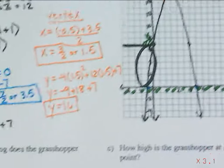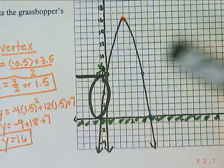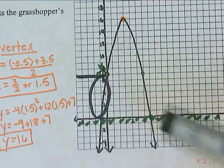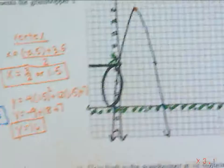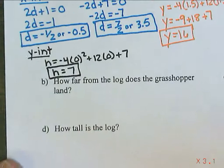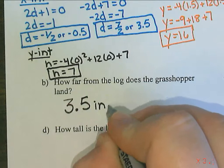So when he is jumping, it says how far from the log does the grasshopper land? So if I take a look, he jumps up, comes down, and he lands 3.5 inches away from where the log is. And we're just doing a horizontal distance there. So it's going to be 3.5 inches away.